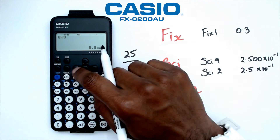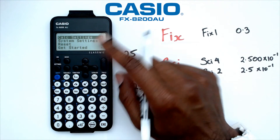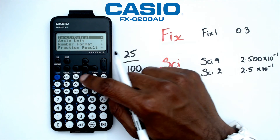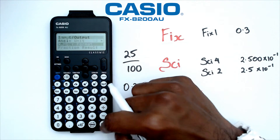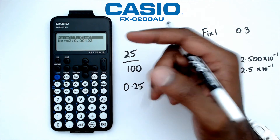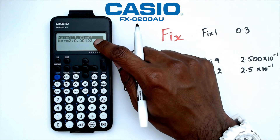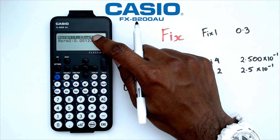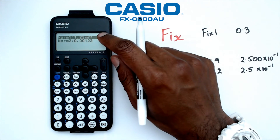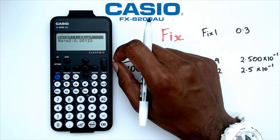We can change it back to normal mode. There's norm 1 and norm 2, and I'll show you what each of them do. When you go into number format, if you forget what norm 1 and norm 2 is, it gives you an example. At the top there, it will write the number in standard form if the number is less than a particular threshold — I think it was 0.0001.